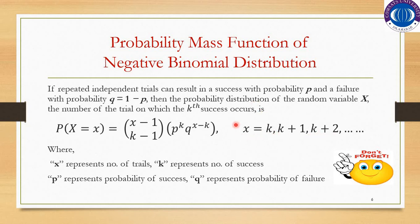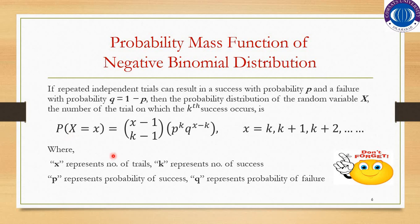In the case of binomial distribution we started x from zero, one, two, three up to n. But in the case of negative binomial distribution, since the PMF is defined for k successes, x will be equal to k, k+1, k+2, and so on. Here x represents the number of trials, k represents the number of successes, p represents the probability of success, and q represents the probability of failure.